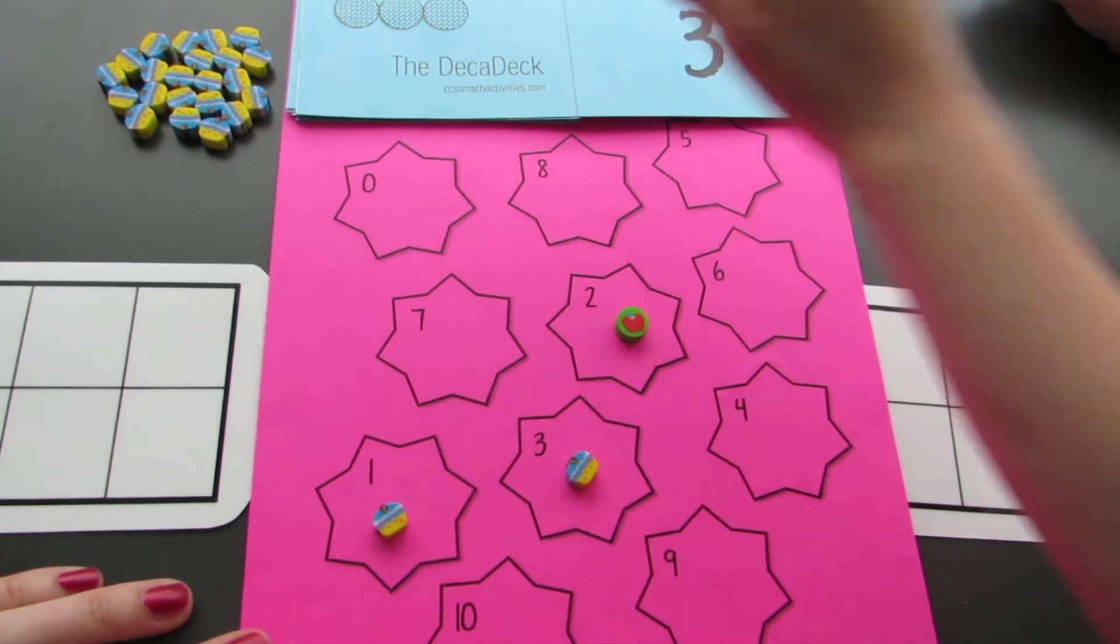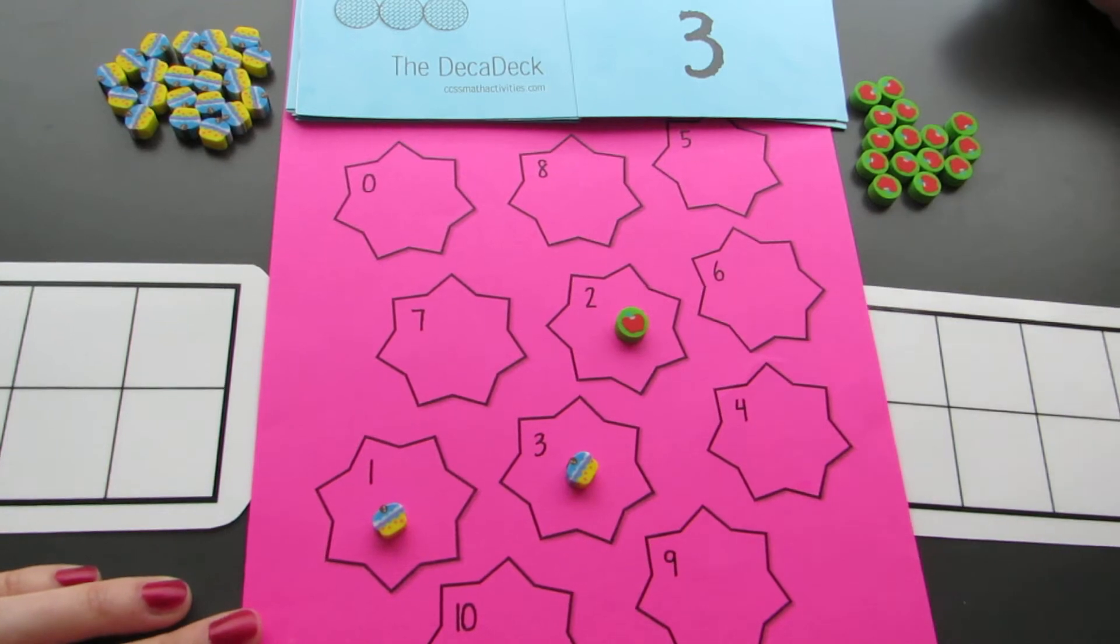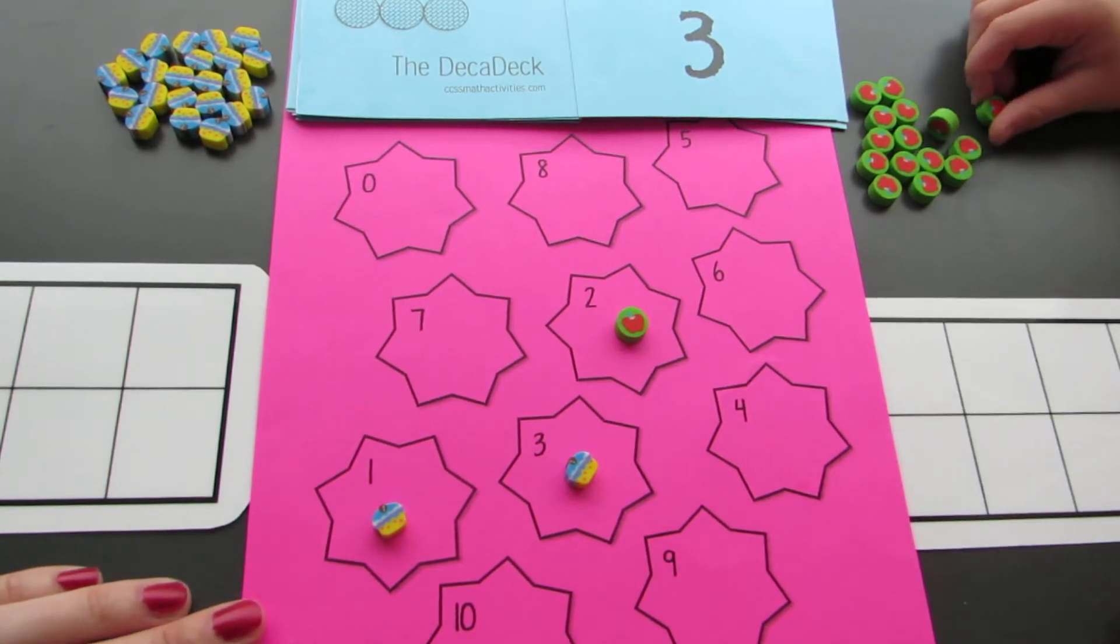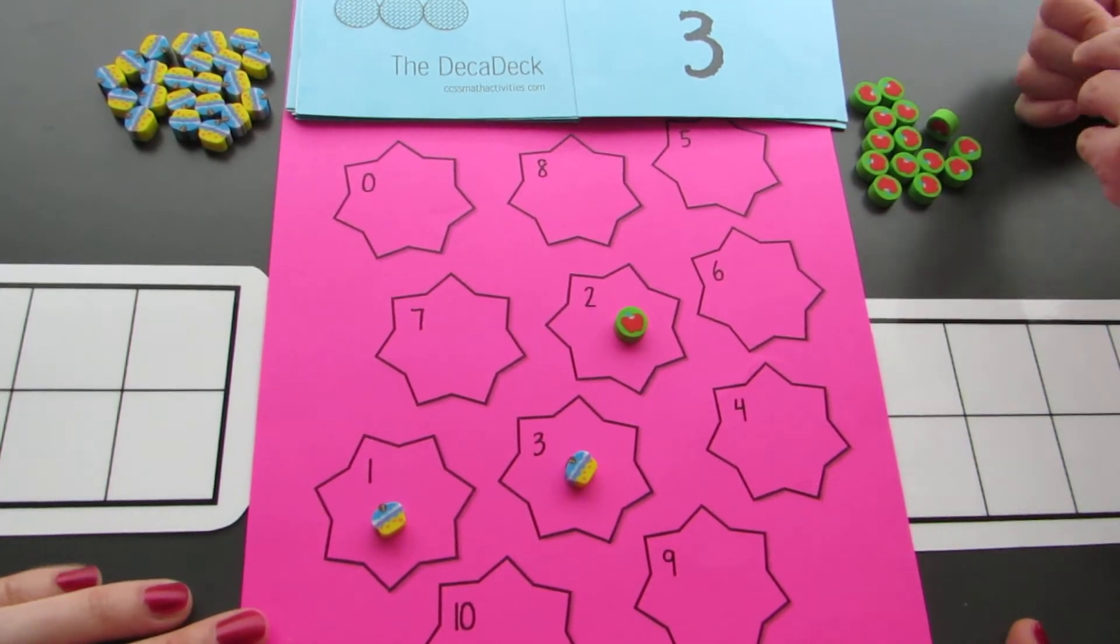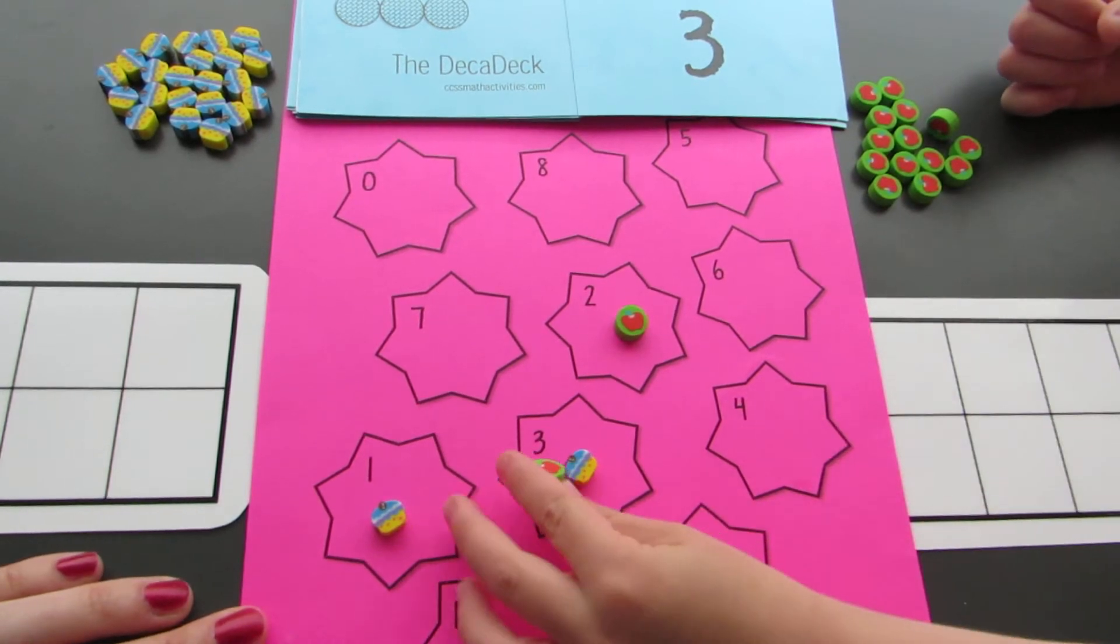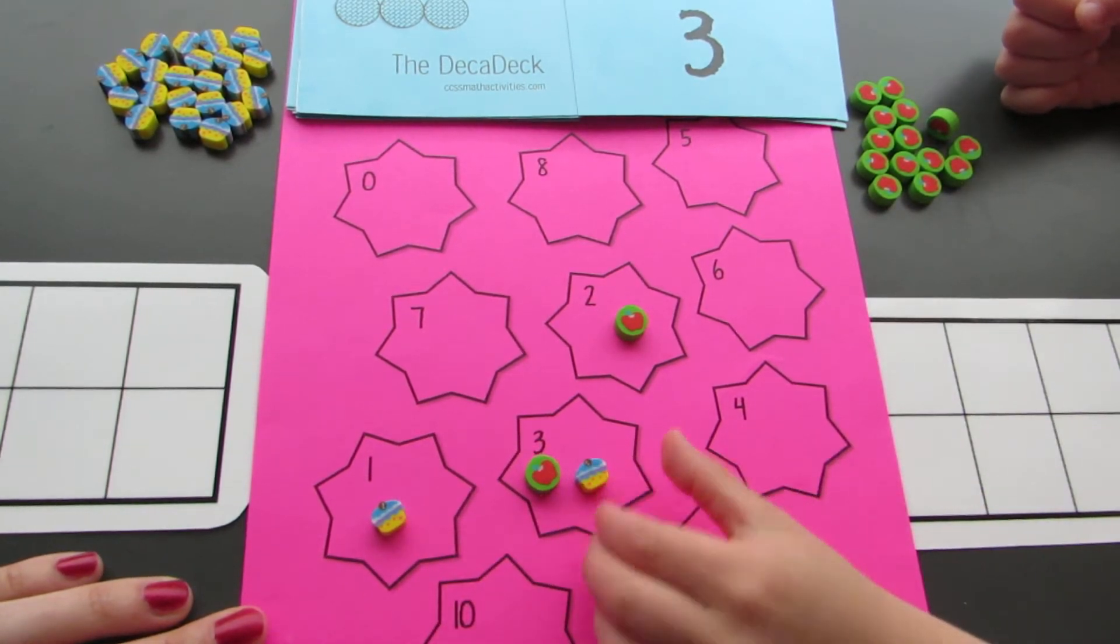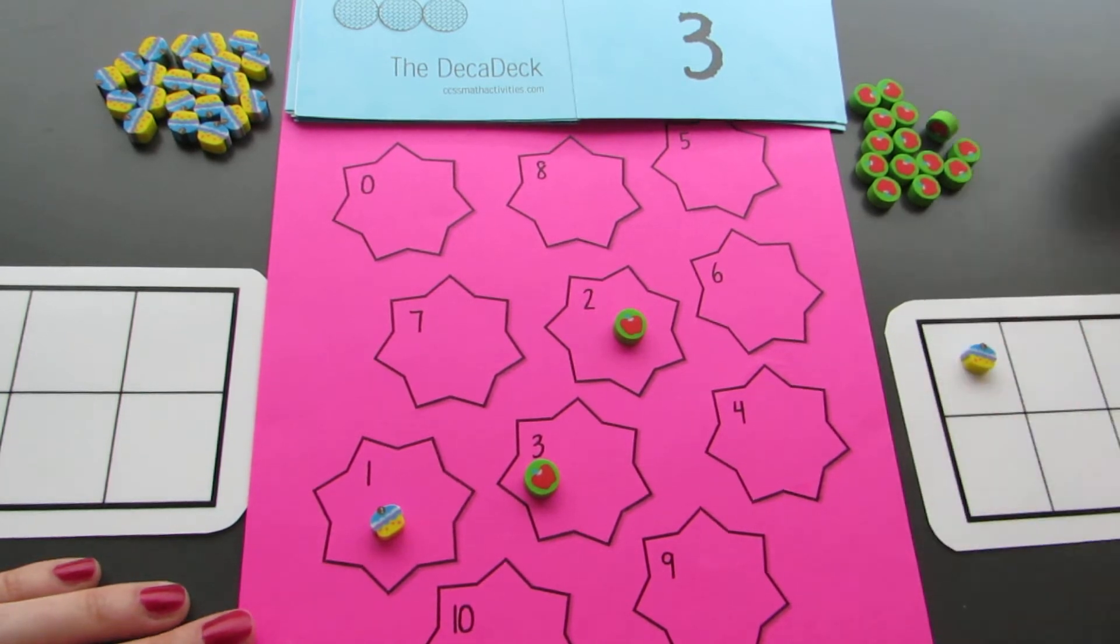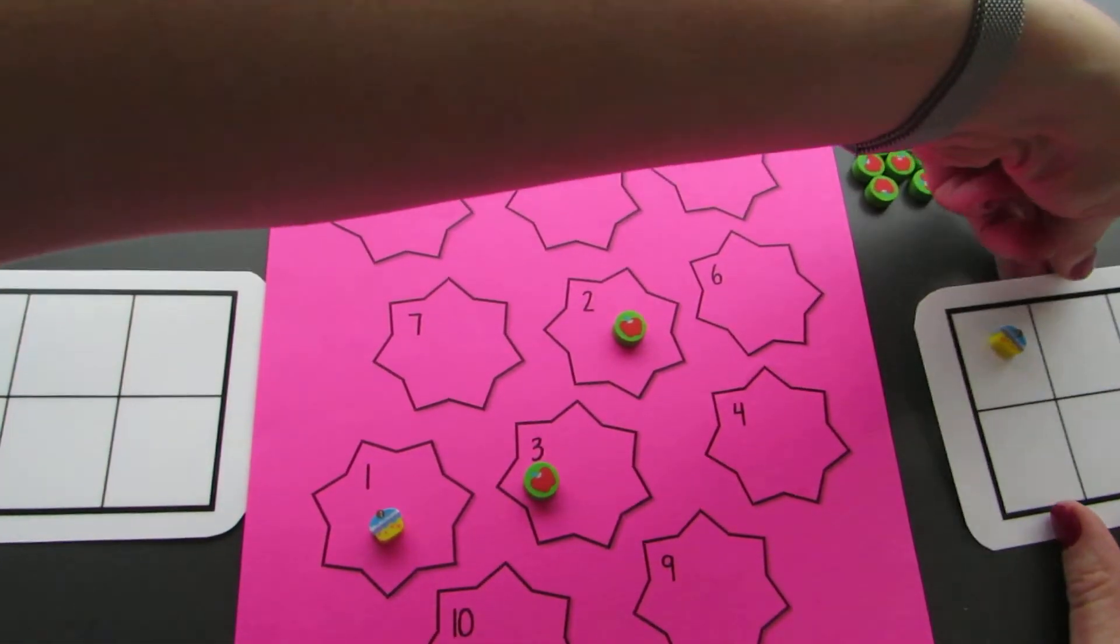Three. Wait a minute. I'm already on a three. That's why this game is called Bump. You're gonna bump me off and put me right onto your scorecard.